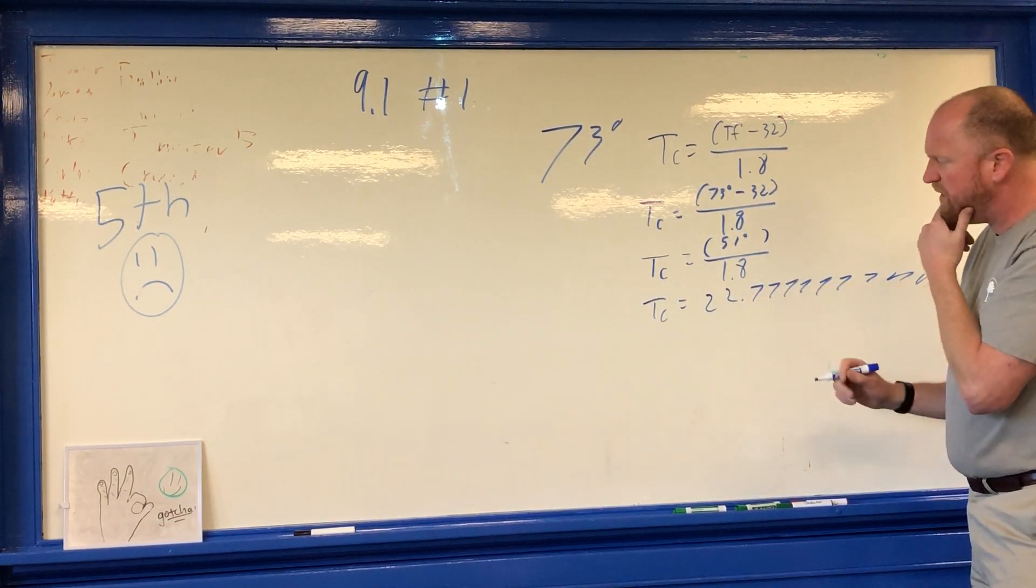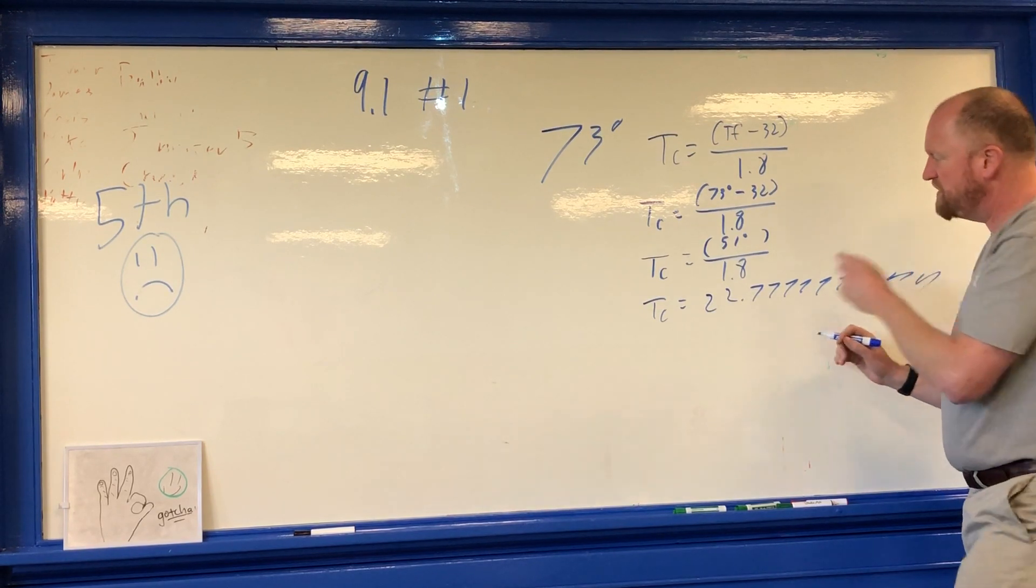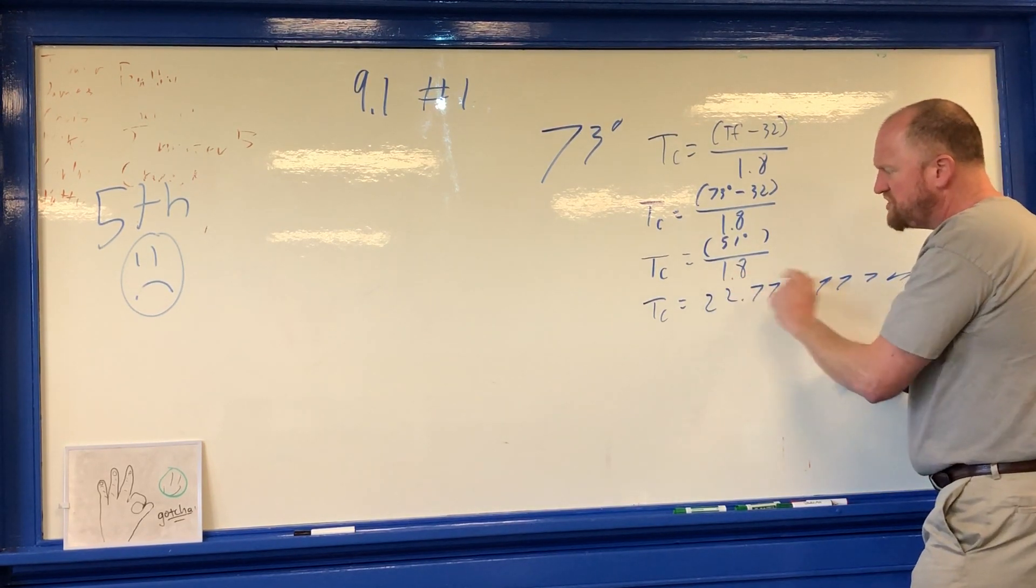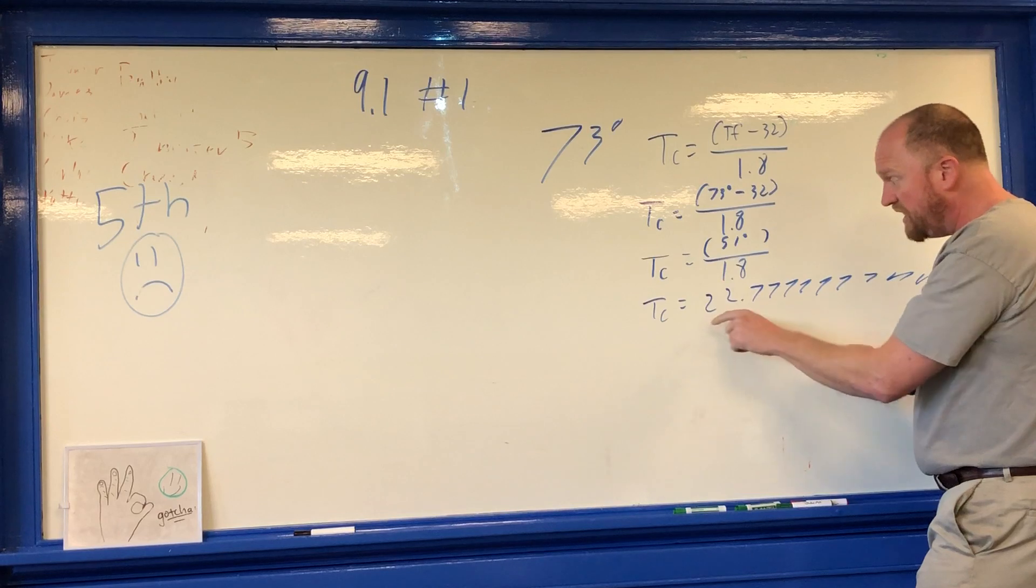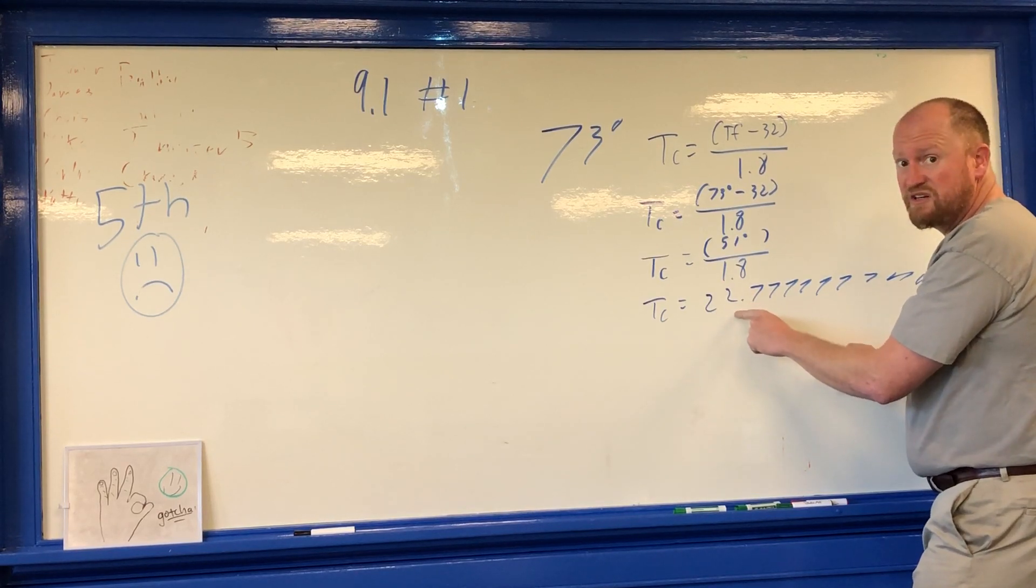But on the other hand, you're also dividing by 1.8, which means that when you divide it, you should only have two sig figs in your answer. Again, you're going to round it here.